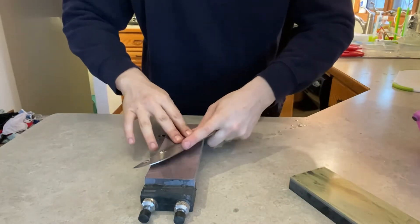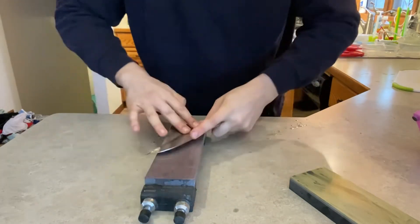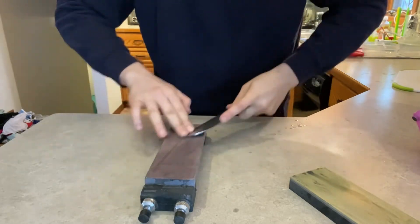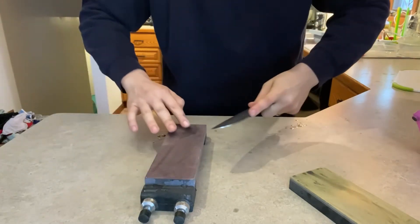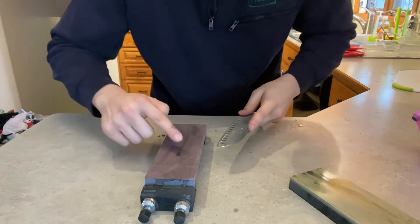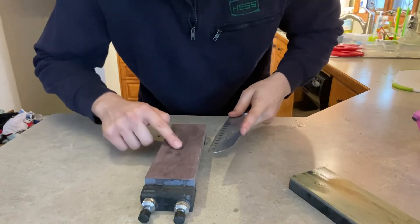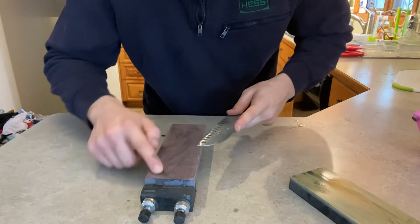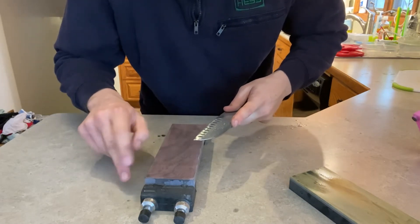I've done this jump up to a Shapton glass 8k before and it worked, didn't remove all the scratches, but the performance of the edge was very good. You can actually see a chunk of the burr. Oh, just fell off, there it is right there. There's a chunk of the burr that came off.